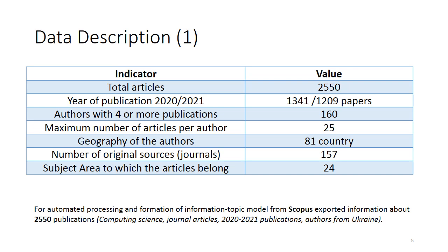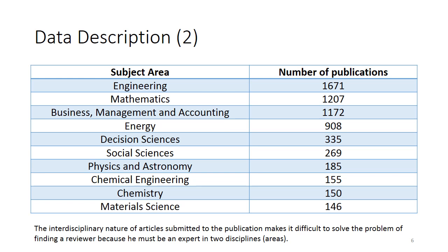On this slide you can see the information about our data. For automated processing and formation of our informational topic model, from Scopus we exported information on more than 2000 publications from the computer science domain — journal articles and publications from 2020 to 2021, and we took authors from Ukraine. Statistics of publications are presented on this slide. It should be noted that articles may be interdisciplinary, meaning the same paper can relate to two areas simultaneously. This is evidenced by 24 subject areas which include 2550 publications in computer science.